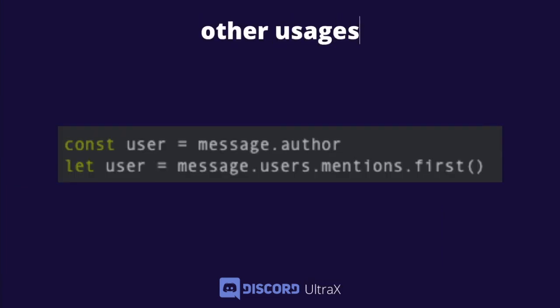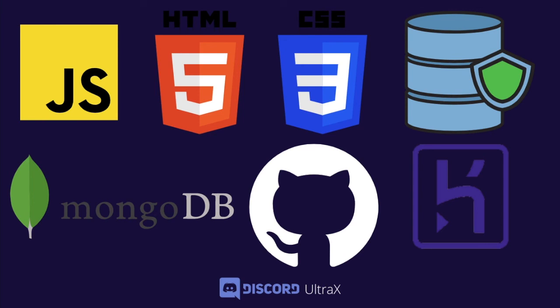Let's look at some other usages. If you get 'user is undefined' you can define it. In the first example: const user = message.author — so whenever you type user in your code it references message.author, saving you from typing message.author every time. With let: let user = message.mentions.users.first() — that gets the first person mentioned in the message. Both const and let work similarly in this case.